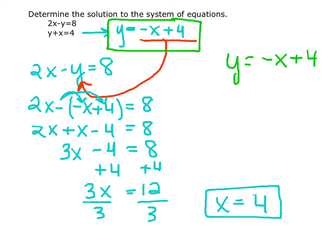We're taking our x equals 4 and plugging it in. So y equals negative 4 plus 4. y equals negative 4 plus 4 and y equals 0.